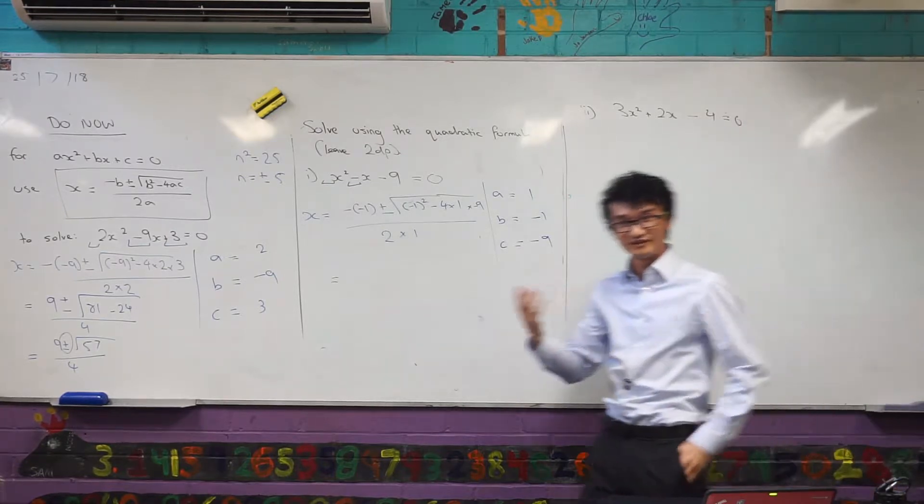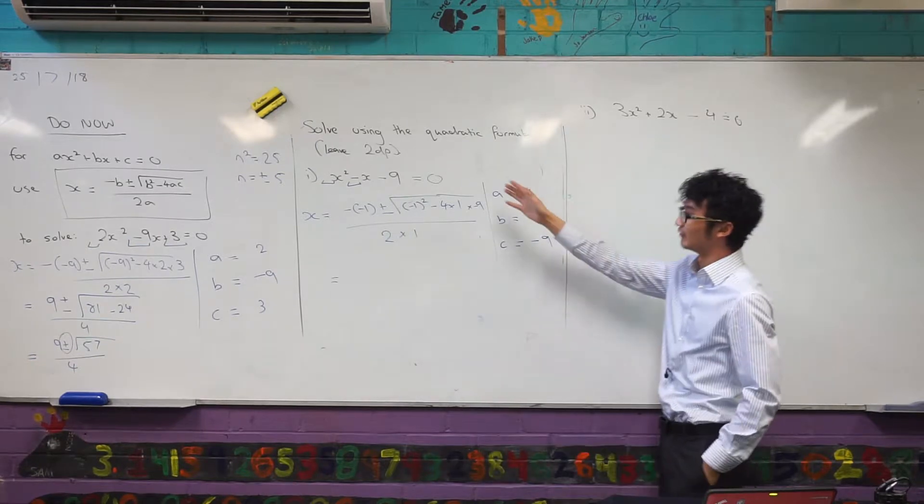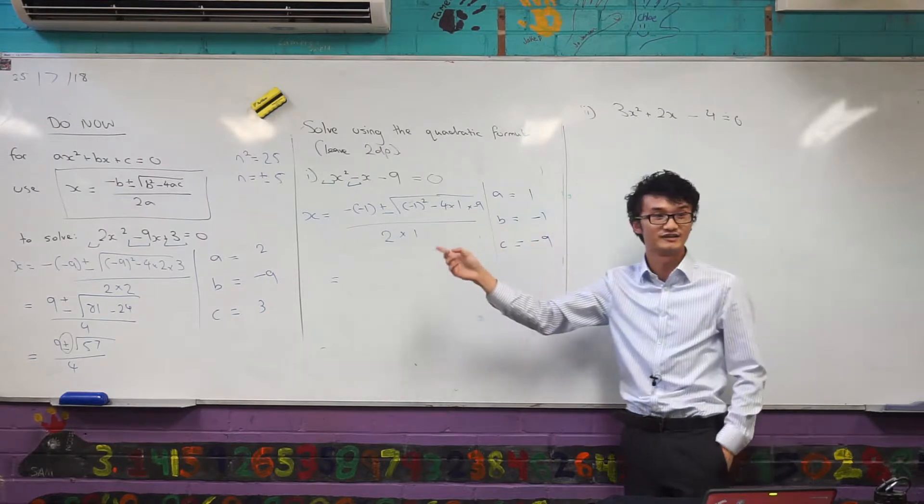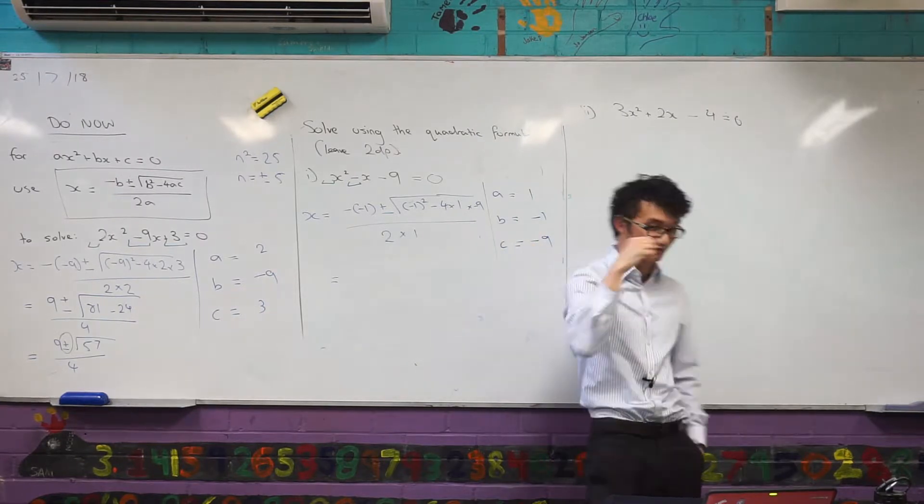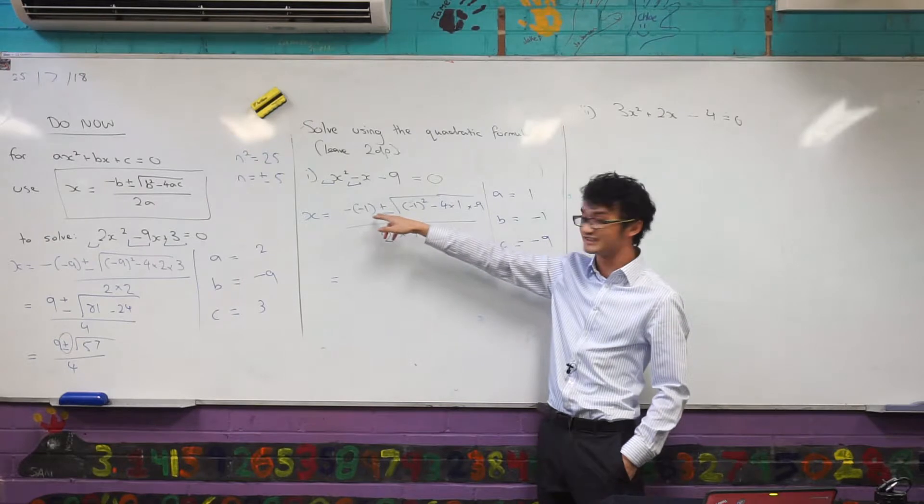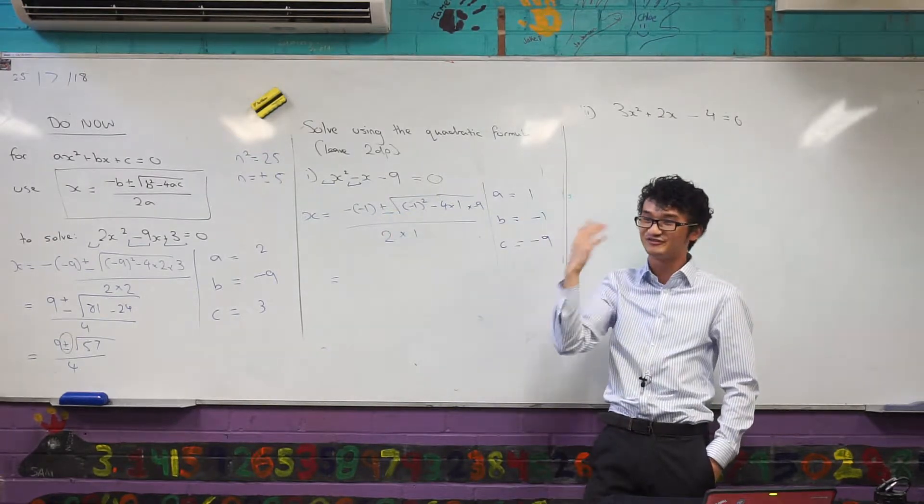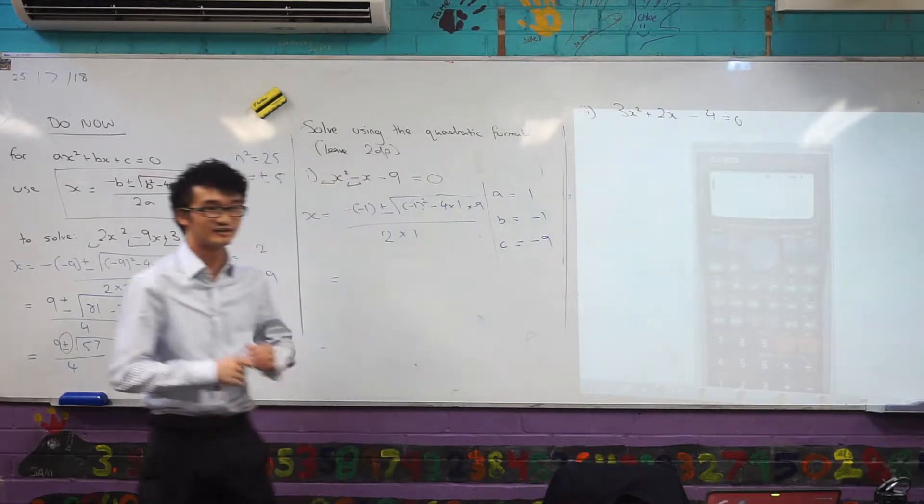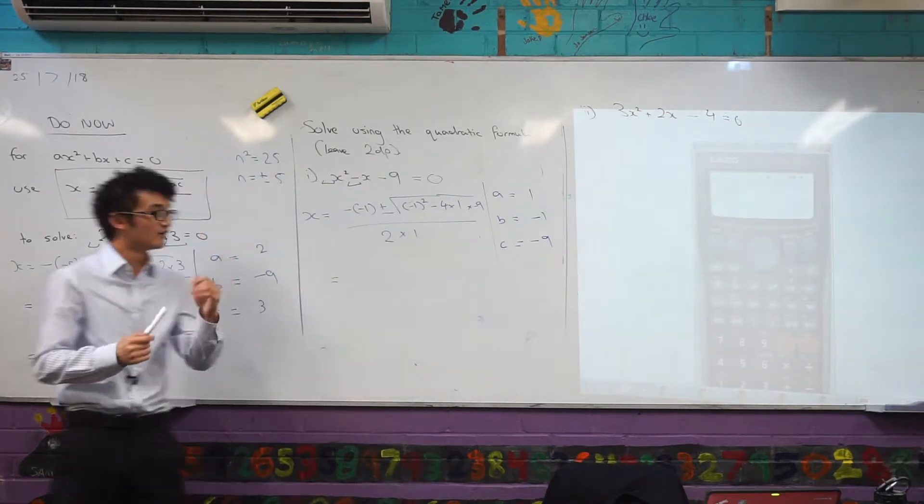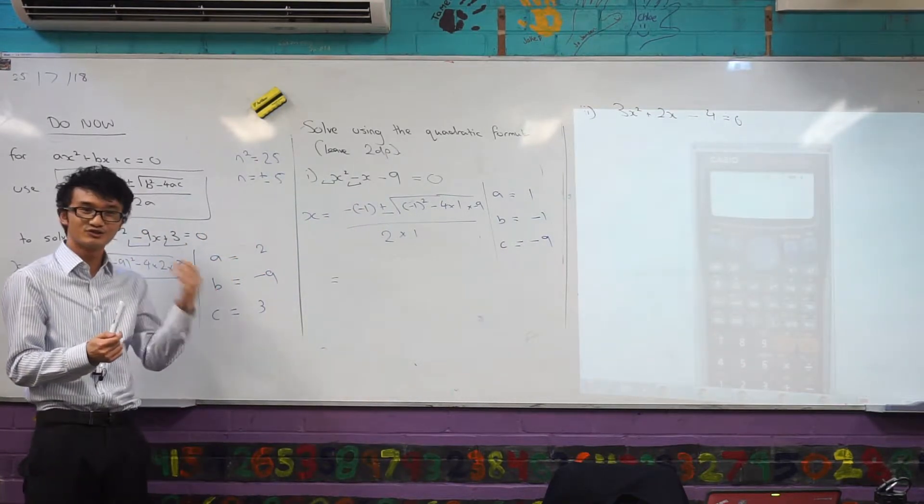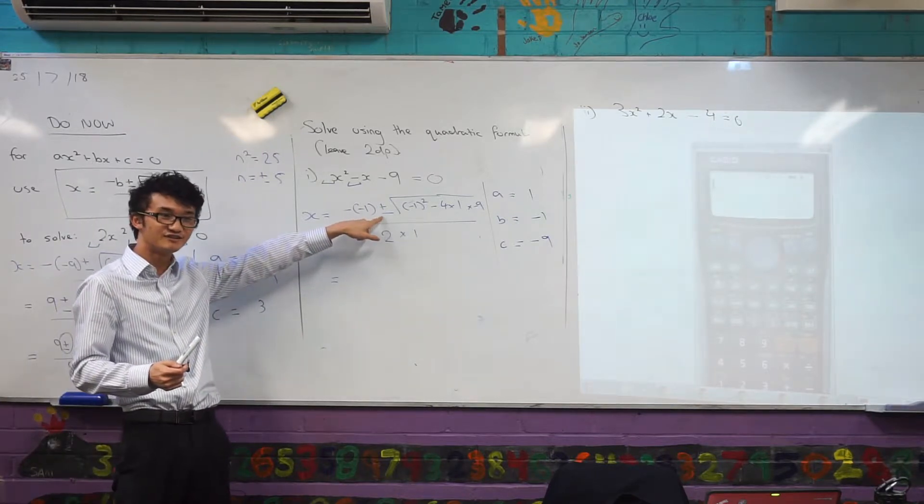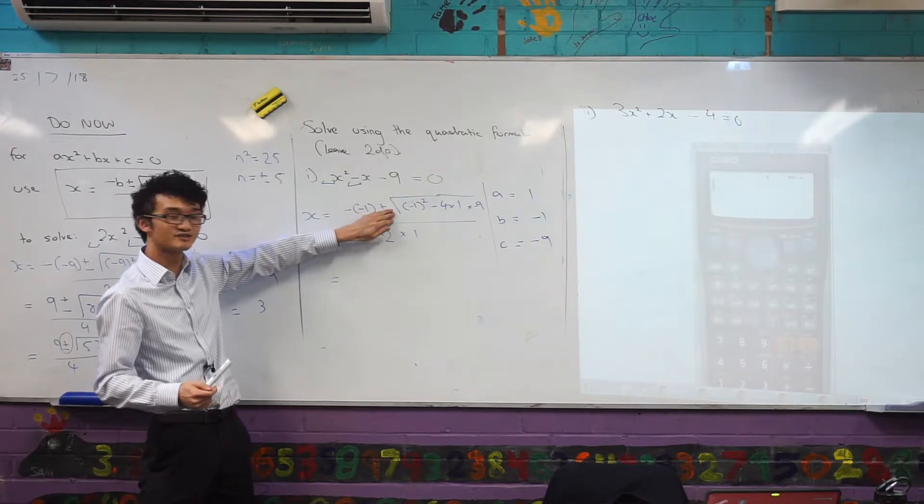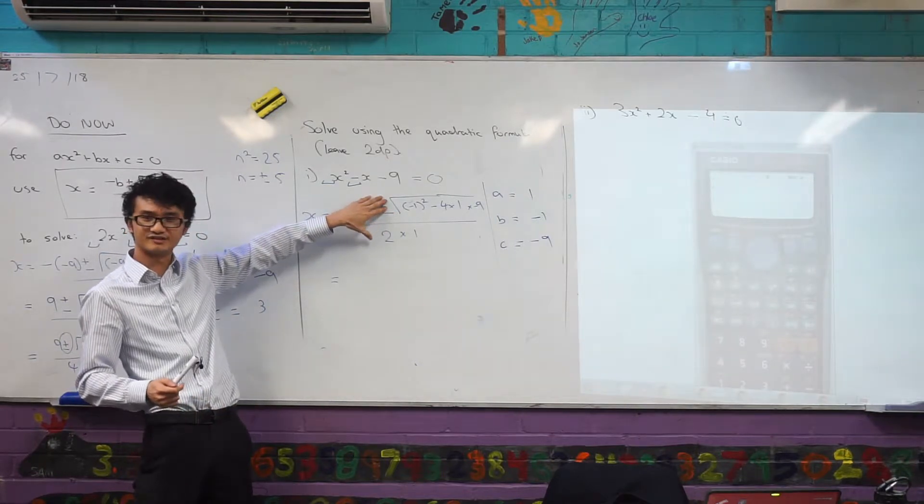One advantage about doing it this way, when I'm asked to find it as two decimal places, is I can actually just put this straight into my calculator. But you need to be really careful when you're doing that, because with all these negatives and all these brackets, it can be very easy to make a mistake. Let me show you how I'd put this into my calculator. First of all, just to remember, where are my two solutions? My two solutions are, because I've got this plus or minus here, either going to be this guy with just the plus, or this guy with just the minus.